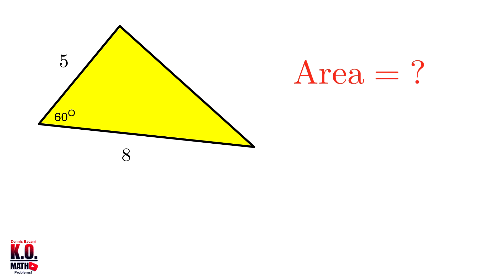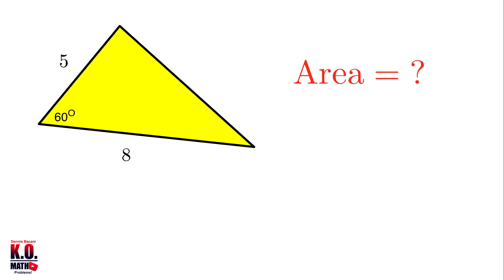Now, how about if we're given two sides of a triangle and the included angle? In this case we can use the formula: area is equal to one-half times a times b times sine of the included angle theta.